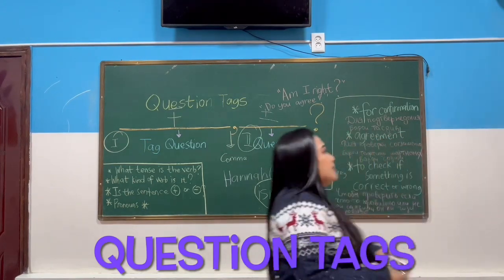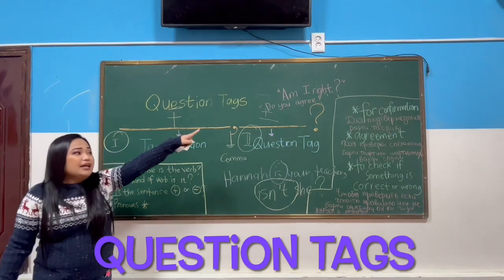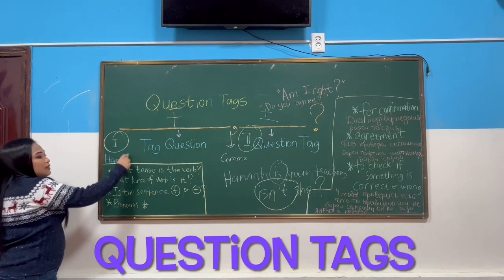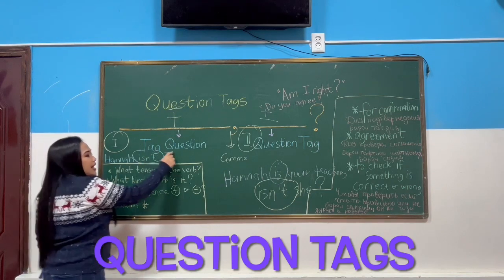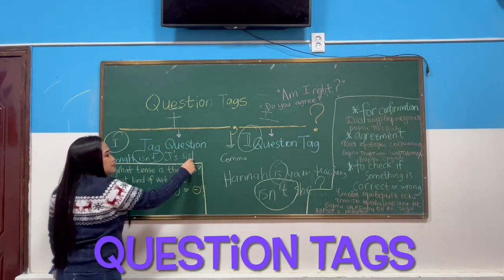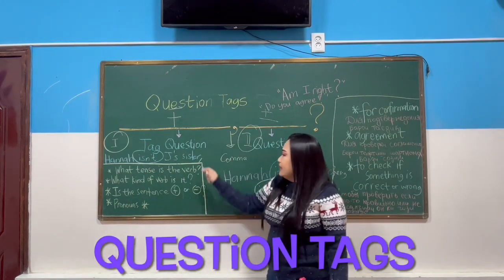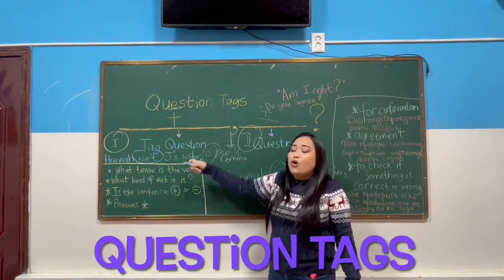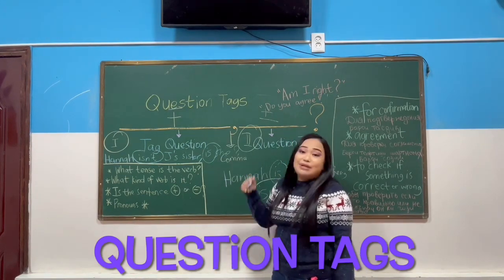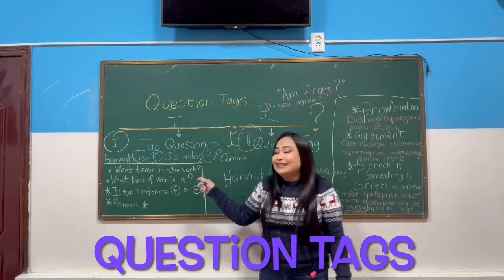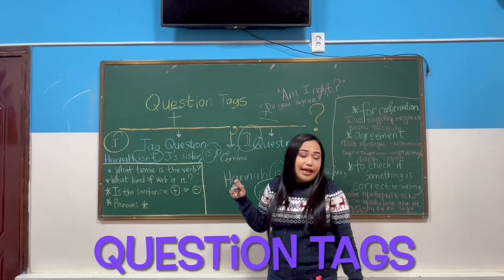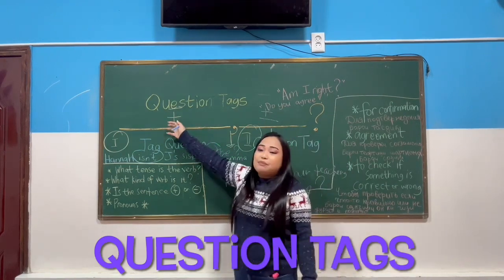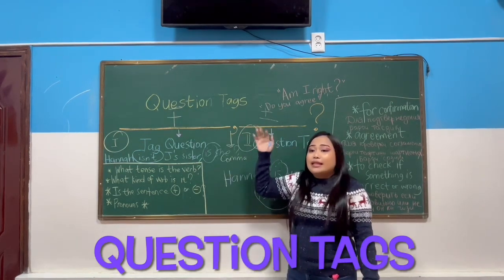The next formula: if the first part is negative, the second part will be positive. For example: 'Hannah isn't Jerilyn's sister.' What is the positive of 'isn't'? It is 'is she.' So if the first part is negative, the second part will be positive; if the first part is positive, the second part will be negative.